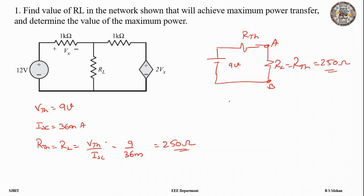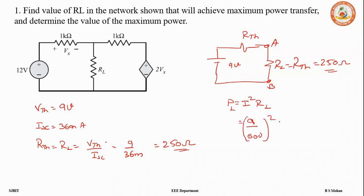We know P = I² × R. The current is simply V/R = 9 / (RTH + RL) = 9 / 500. So the maximum power is P = (9/500)² × 250 = 81 mW.